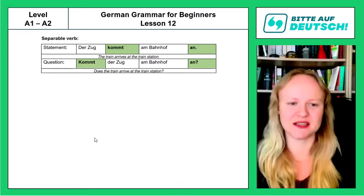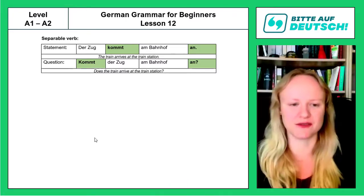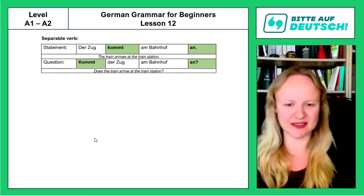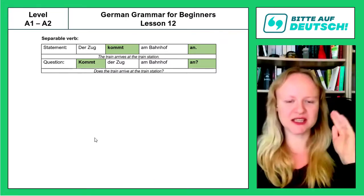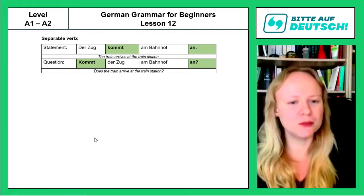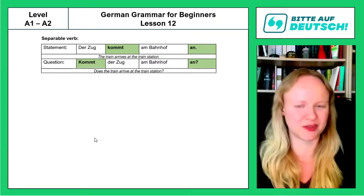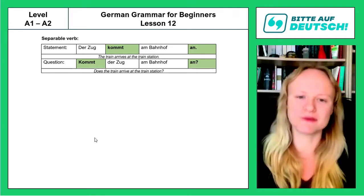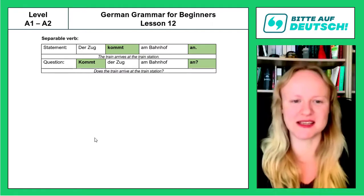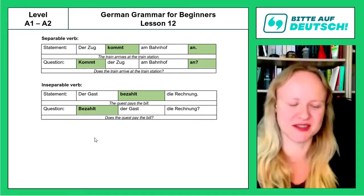To turn a separable verb statement into a yes/no question, we invert the subject and the conjugated part of the verb — moving 'kommt' to the first position — but we don't change anything about the prefix at the end; it stays there as the right bracket. So the yes/no question becomes: 'Kommt der Zug am Bahnhof an?' The flexible part is the left bracket; the right bracket stays at the end, followed only by a question mark.